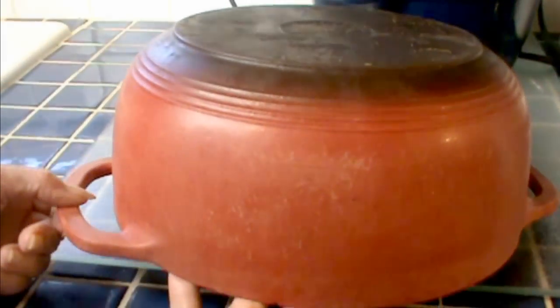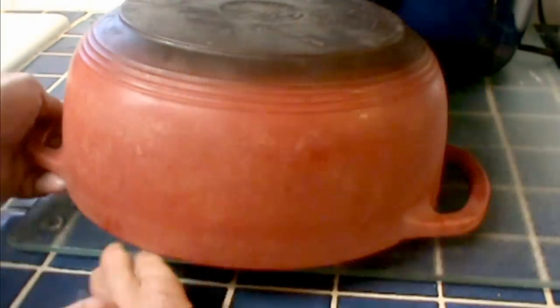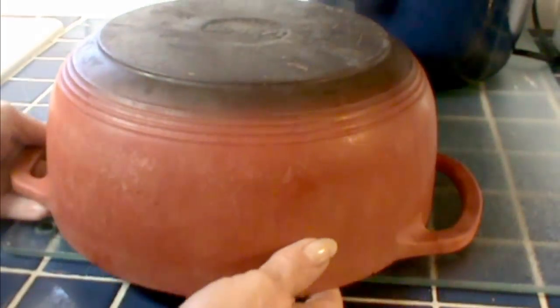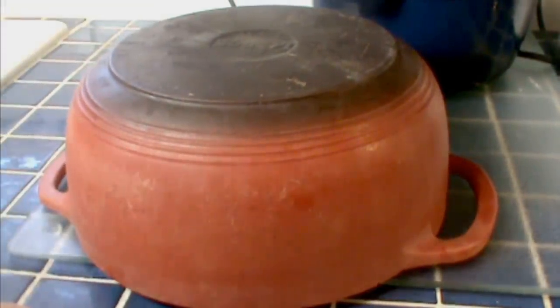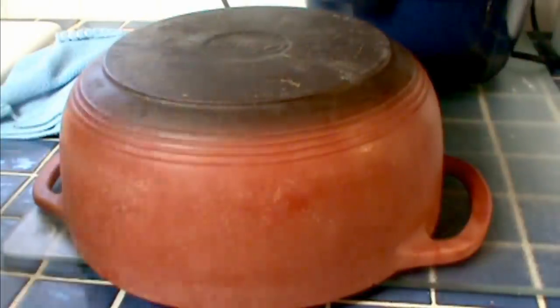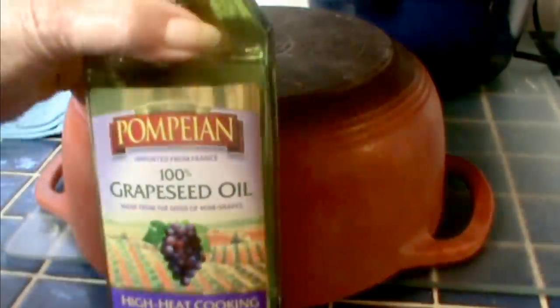This is a Lodge 5-Quart Dutch Oven Enameled Cast Iron Red. And red fades worse than any other color as far as I can tell. This one is only six years old, but it's been used a lot. If you watch my videos, you've most undoubtedly seen this cast iron pot. Now, believe it or not, this pot is clean as a whistle.